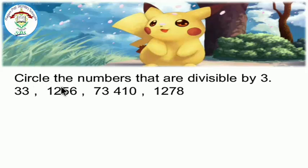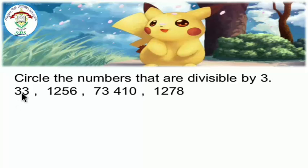Circle the numbers that are divisible by 3. 33 divided by 3 equals 11 — there is no remainder. The remainder is 0, so 33 is divisible by 3.